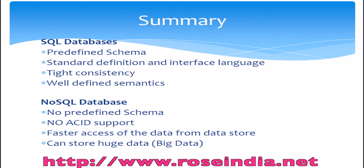Let us see the summary of RDBMS and NoSQL databases. RDBMS provides a predefined schema, has a standard definition and interface language, and well-defined semantics. In NoSQL database, there are no predefined schemas, no ACID support, but faster access to data from the data store is a great feature of NoSQL and it can store huge data.